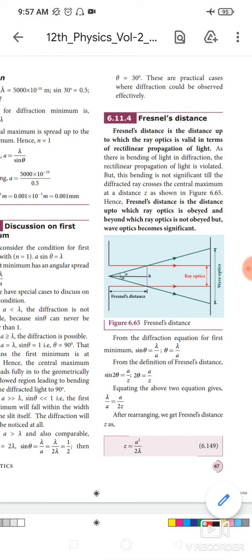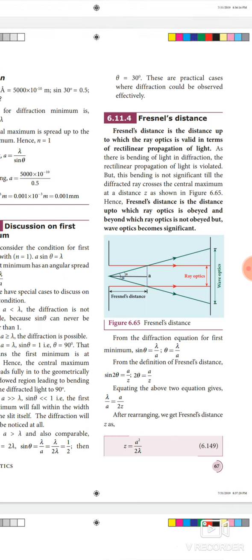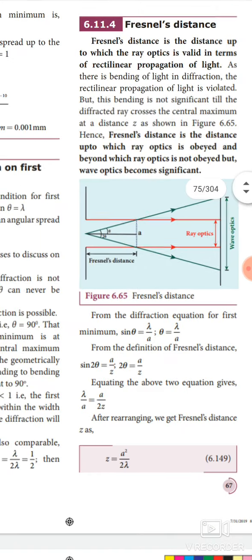First of all, Fresnel's distance is the distance up to which ray optics is obeyed, and beyond which ray optics is not obeyed but wave optics becomes significant. See figure 6.65. What is meant by ray optics? What is meant by wave optics? In ray optics, light travels only in a straight line. That is called ray optics. But in wave optics, the light can be diffracted — diffracted means bending of light.